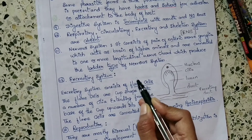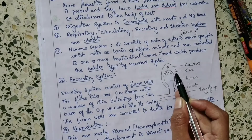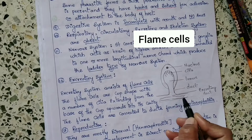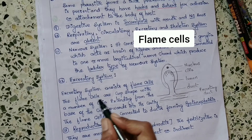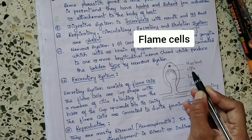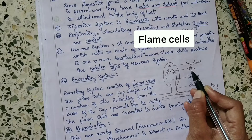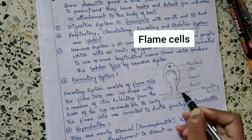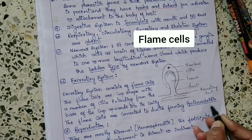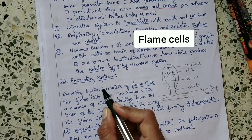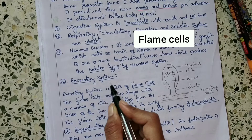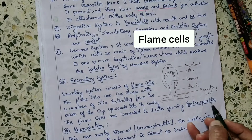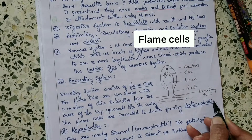The excretory system consists of flame cells. These flame cells are cup-shaped with a number of cilia extending from the base of the cup upwards into its cavity — you can see the nucleus, cilia, lumen, duct, and excretory duct in the diagram. These flame cells are connected to ducts forming proto-nephridia. In the examination, they may ask about the excretory system of Platyhelminthes — that is flame cells — and what are proto-nephridia.